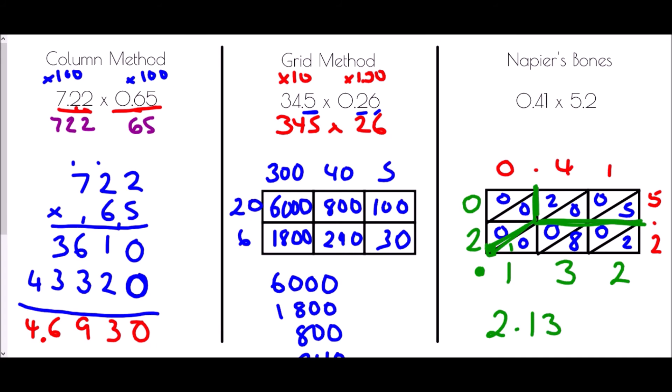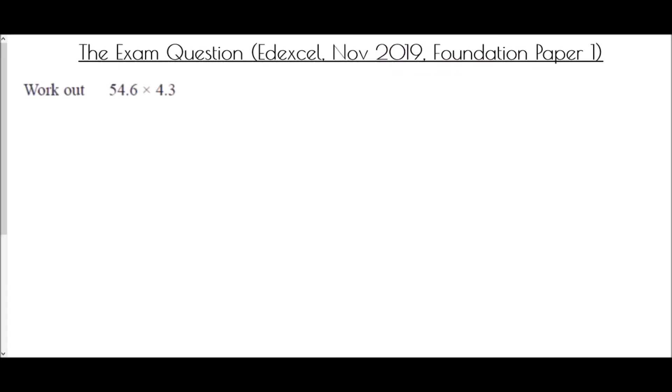And finally we come to the exam question: Edexcel November 2019 Foundation Paper 1 — work out 54.6 times 4.3. This is a very standard multiplying decimals question. It has come up on higher papers too, so it's occasionally a crossover question. You'll also see questions like this a lot when dealing with money, so it comes up in many different situations.